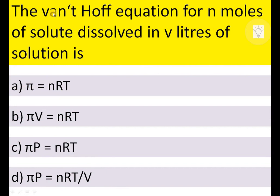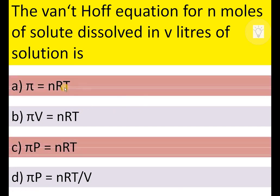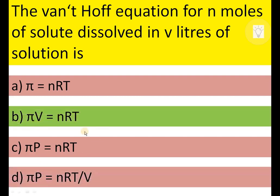The Van't Hoff equation for n moles of solute dissolved in V liters of solution: options without V are eliminated. The equation contains π (osmotic pressure), so no additional pressure term is needed. Therefore, B — πV = nRT — is the correct answer.